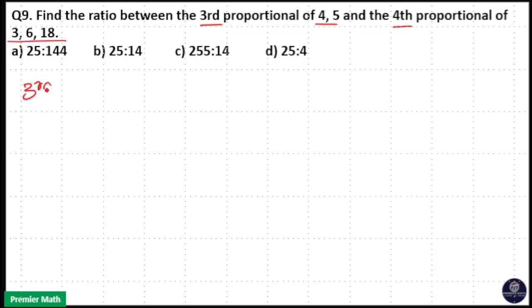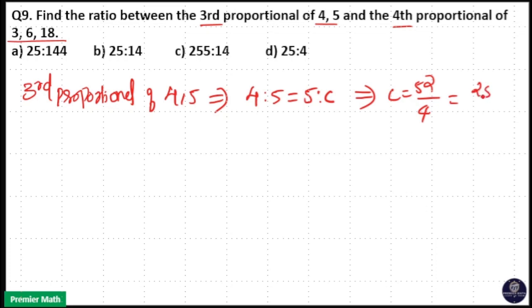Here, 3rd proportional. 3rd proportional of 4 and 5 means 4 is to 5 is equal to 5 is to C. That means C is equal to 5 squared by 4, that is 25 by 4.